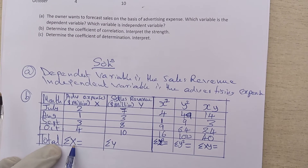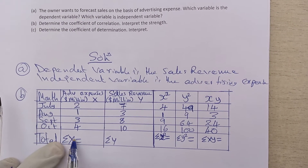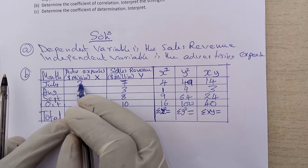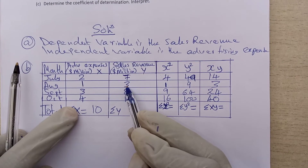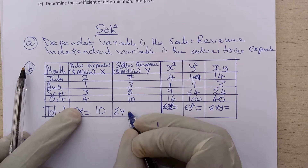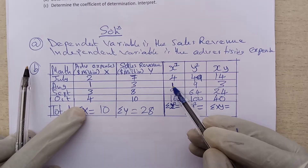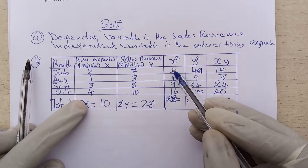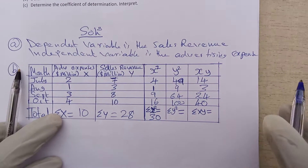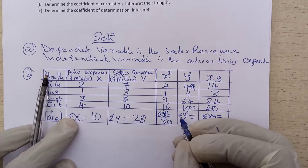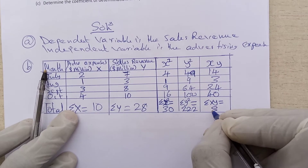Then you add all the columns. Sigma X, the sum of X, gives you ten: two plus one is three, plus three is six, plus four is ten. Sigma Y: seven plus three is ten, plus eight is eighteen, plus ten is twenty-eight. Sigma X squared: four plus one is five, plus nine is fourteen, plus sixteen is thirty. When you add all the XY values together, you get eighty-one.